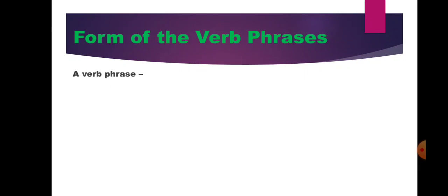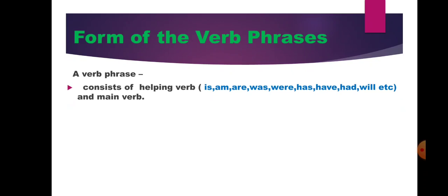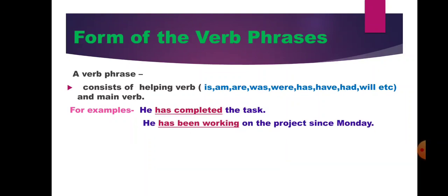Forms of the verb phrase. A verb phrase consists of a helping verb — such as is, am, are, was, were, has, have, had, will, etc. — and a main verb. When you get any helping verb with a main verb, that group of words is a verb phrase. Example: 'He has completed the task' — has is a helping verb, completed is a main verb, so 'has completed' is a verb phrase. 'He has been working on the project since Monday' — has been working is a verb phrase. 'They were walking in the park' — were walking is a verb phrase.